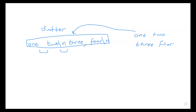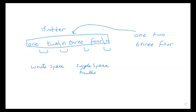When you read your book, you will find that they use the word 'white space.' A white space consists of either just a regular single space, multiple spaces including tabs, and then the new line character. This is important for us to understand when we think about how tokenization is done.